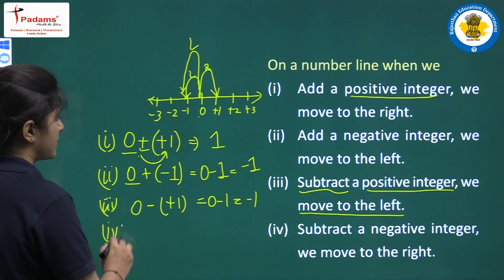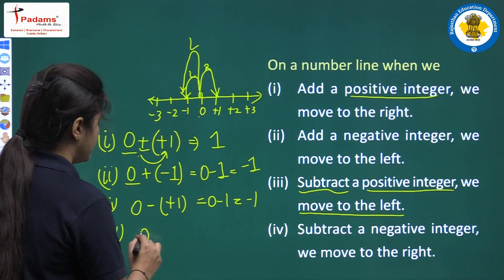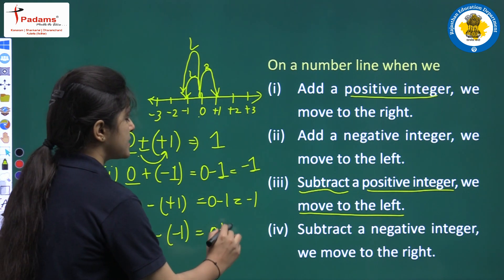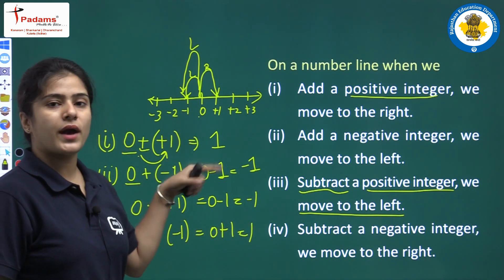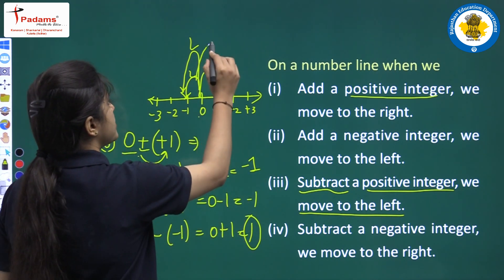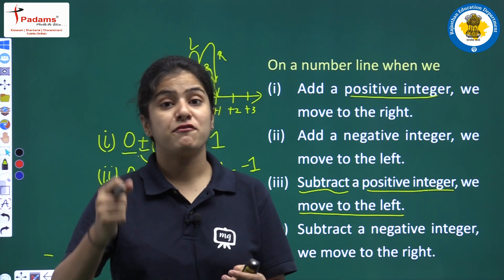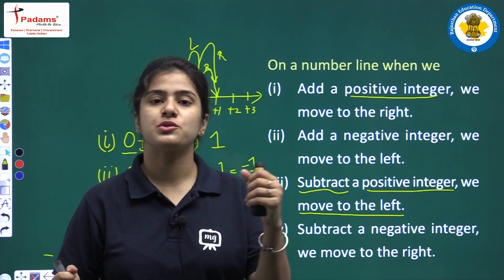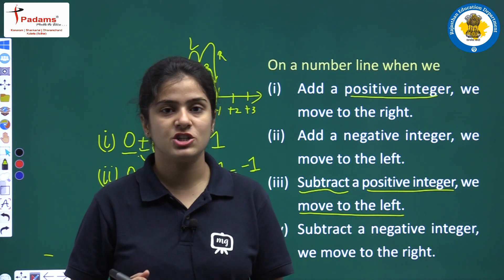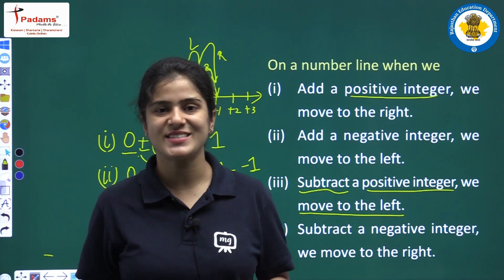When we subtract a negative integer, we move to the right, because minus minus is plus — so 0 plus 1 equals 1. Initially on 0, we move to the right side. To summarize on a number line: adding a positive integer → move right; adding a negative integer → move left; subtracting a positive integer → move left; subtracting a negative integer → move right.